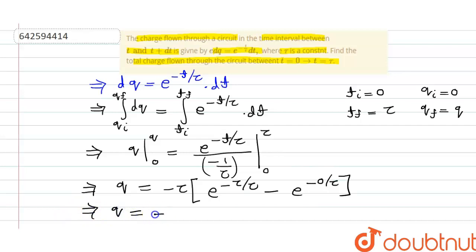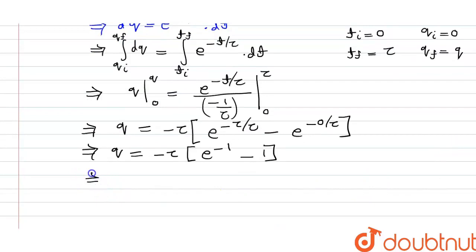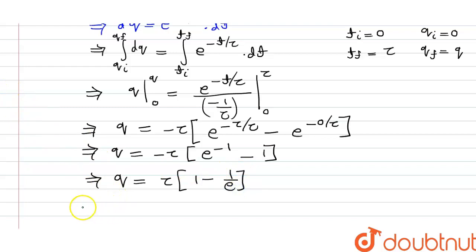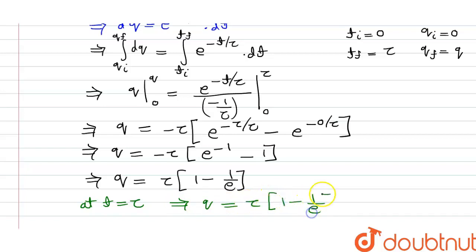This gives q equals minus tau bracket e raised to minus 1, minus 1. We can further simplify to write q equals tau bracket 1 minus 1 divided by e. So our final answer at t equals tau is q equals tau times the quantity 1 minus 1 by e. Thank you.